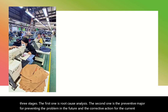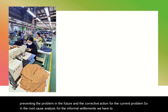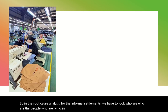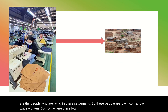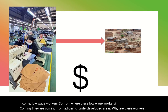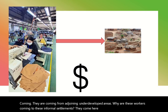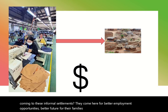In the root cause analysis for informal settlements, we have to look at who are the people living in these settlements. These people are low-income, low-wage workers. Where are these low-wage workers coming from? They are coming from adjoining underdeveloped areas. Why are these workers coming to these informal settlements? They come here for better employment opportunities and a better future for their families, because they feel that the development done in these areas offers more.